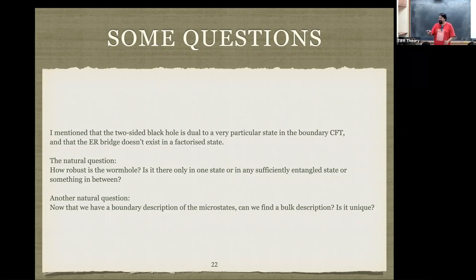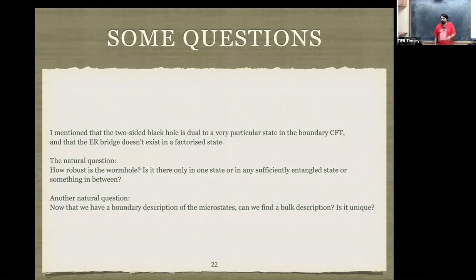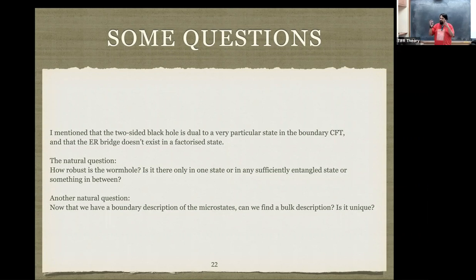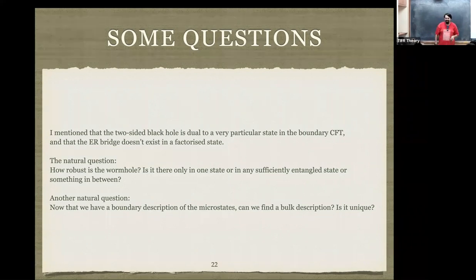A related question: are generic states firewalls? It is believed that typical states are firewalls, though there is a slightly unconvincing argument by Bousso and Polchinski. The most convincing argument given is that we haven't found a description for typical states that is smooth. So many people believe typical states are firewalls. If the total number of states is e to the S, then only order-one orthogonal states are smooth — these are a measure-zero fraction of the full e to the e to the S states in the Hilbert space.